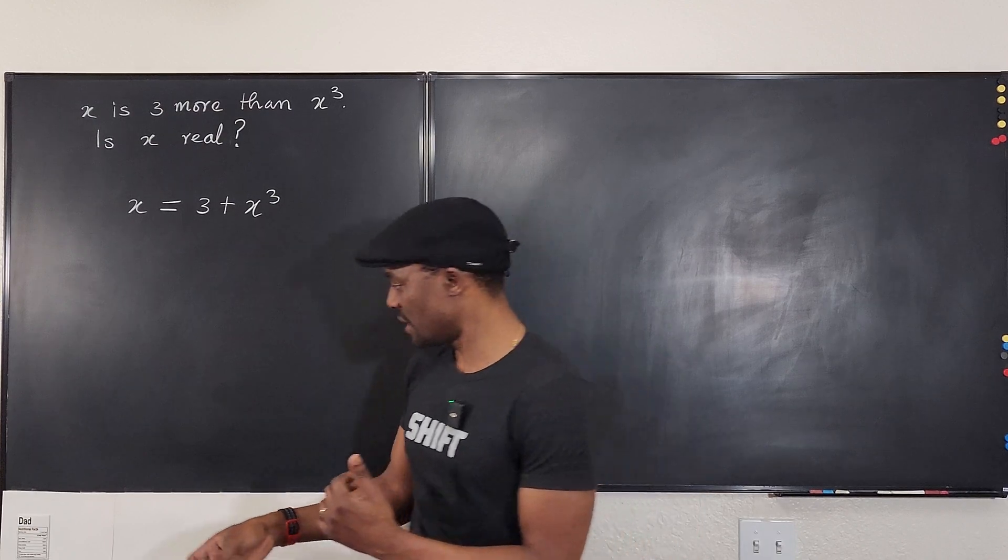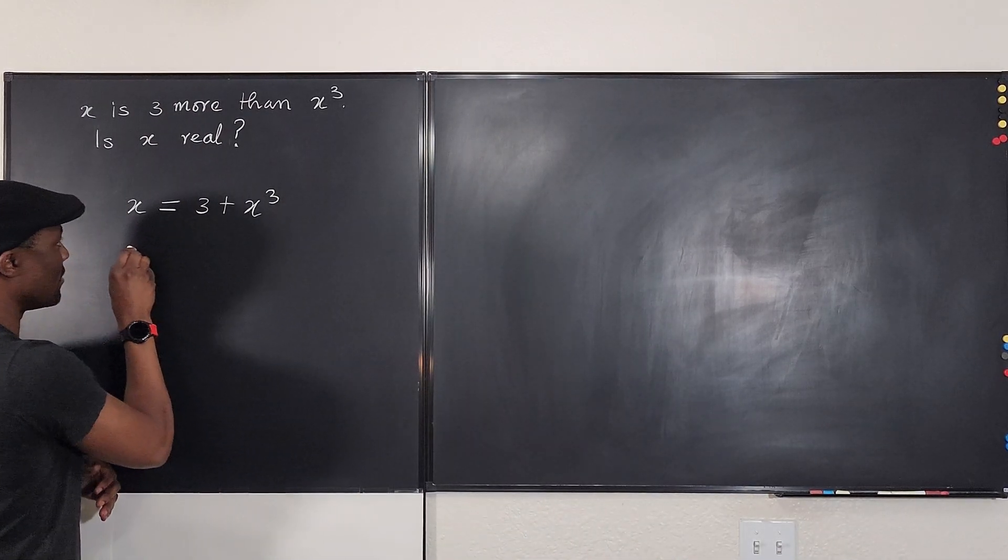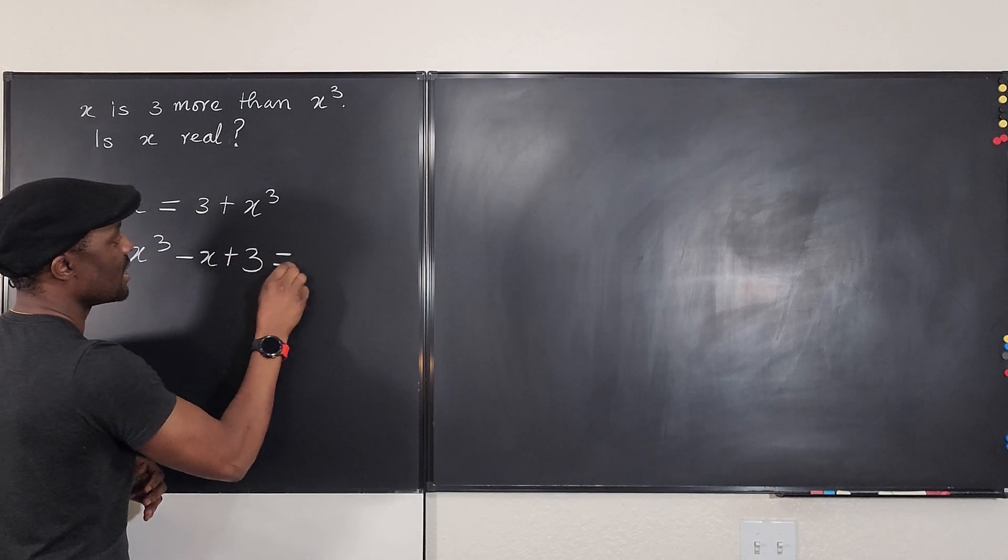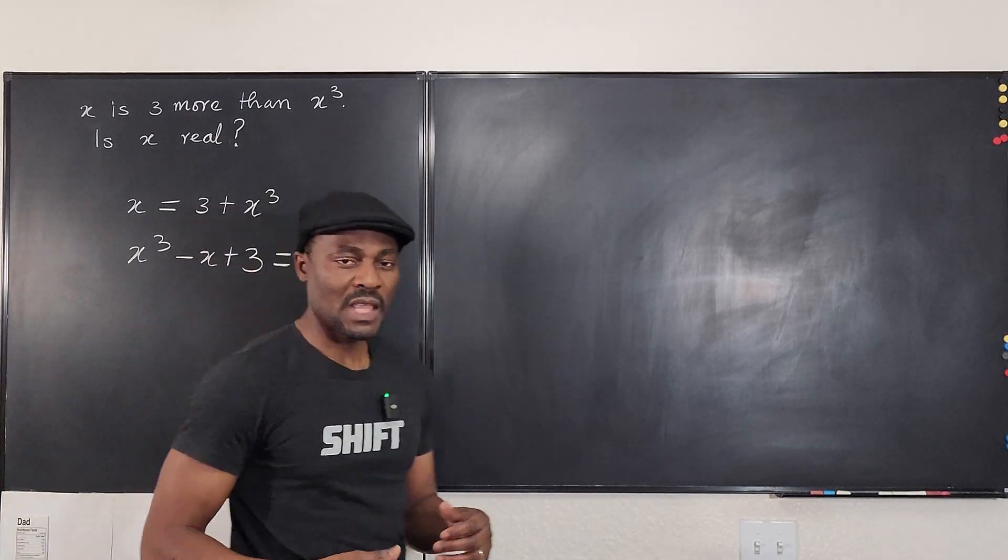Can you solve this equation? Let's see. We're going to have x cubed minus x plus 3 is equal to 0. Can you solve this?